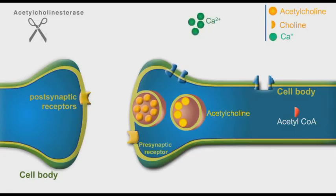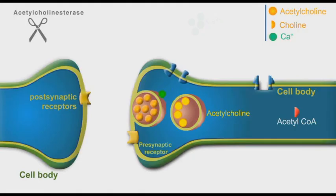De-polarization of the presynaptic neuronal cell membrane results in the opening of voltage-gated calcium channels, which allow the influx of calcium ions into the neural cytoplasm. The influx of calcium ions stimulates the release of acetylcholine neurotransmitter molecules from their intracellular storage vesicles.